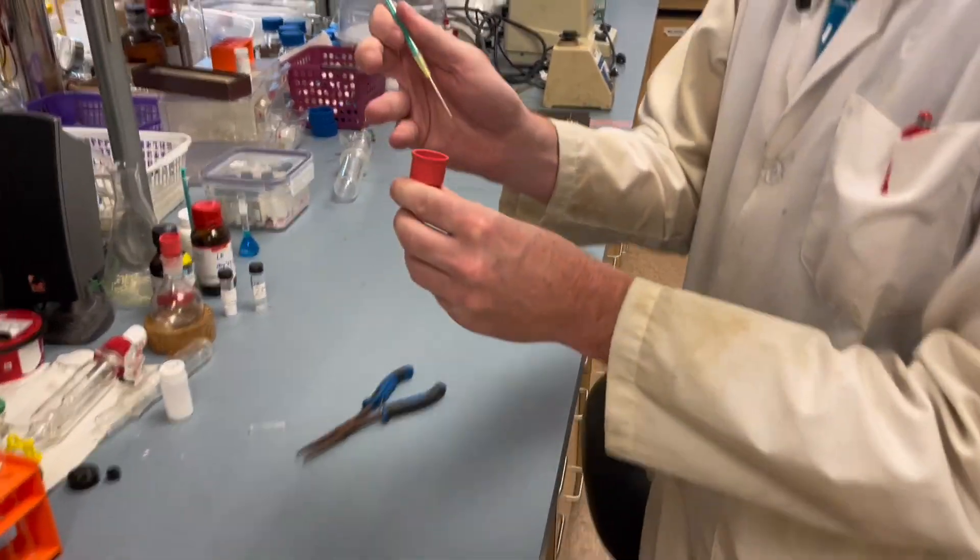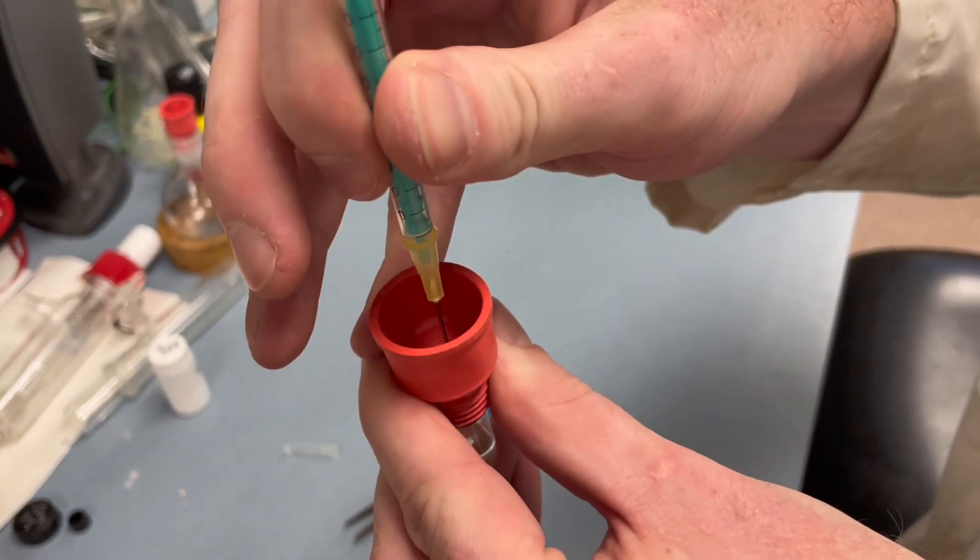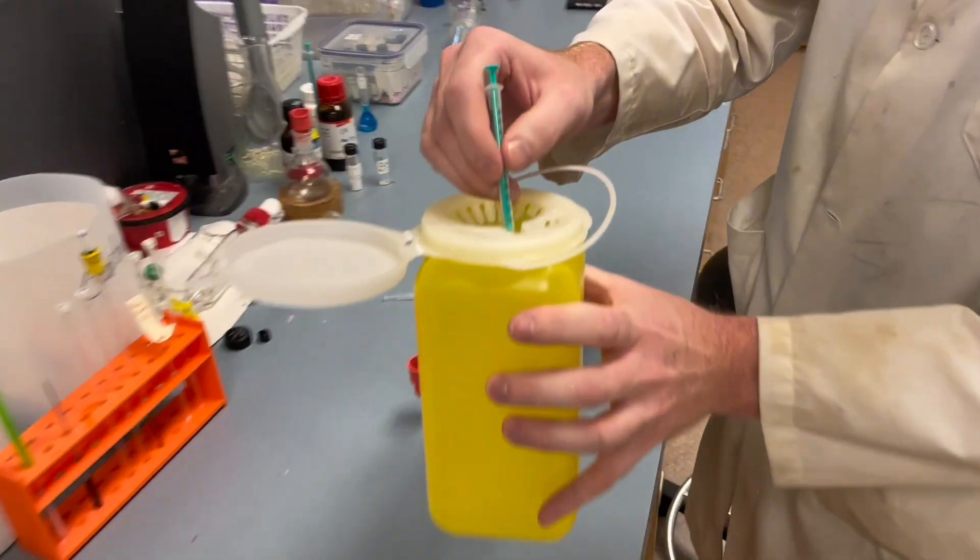Now what we'll do is we'll poke a hole through here which we can put our blunt tip needle through. Once we've done that we'll use again the sharps disposal container to safely remove this.